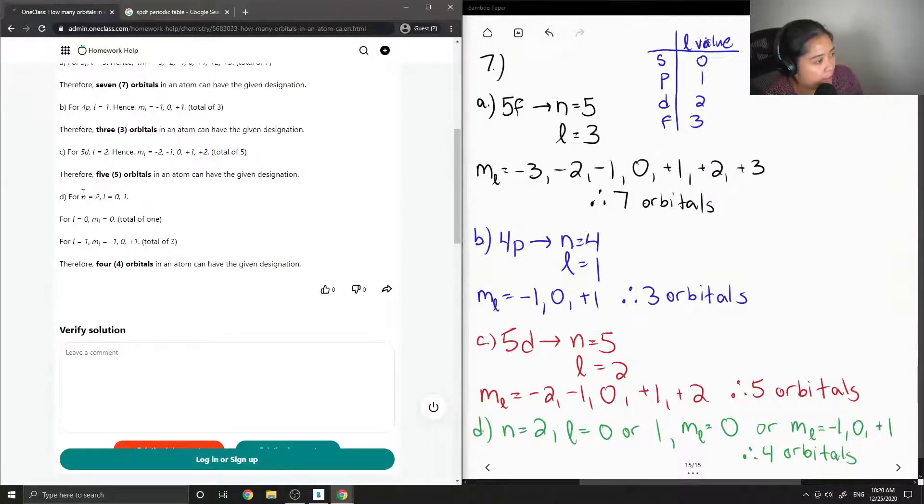And then for n equals two, l can either be equal to zero or one. So for l equals zero, ml is equal to zero, so total of one. l equals one, ml is equal to negative one, zero, or positive one, total of three. Therefore, four orbitals in an atom can have the given designation.